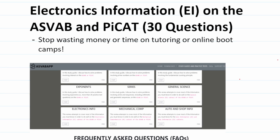I want to give you an update about my website asvabapp.com. I've added study guides for every topic you need to know for the ASVAB and PyCat including electronics information. This study guide for electronics info is three pages long. If you read this study guide and then take this practice test, that's really all you need to do to prepare for this subtest, and it should take you no more than three or four hours. So let's go ahead and get started with this practice test.